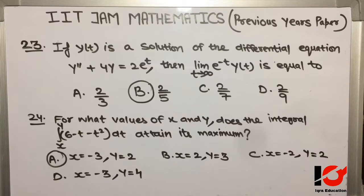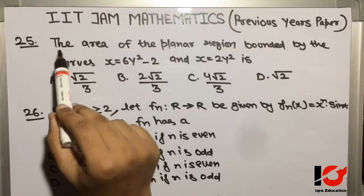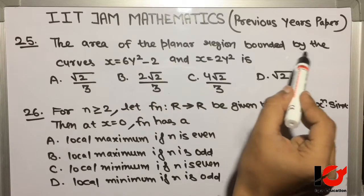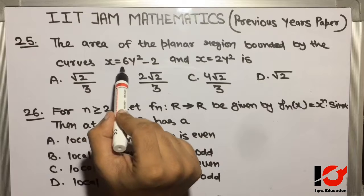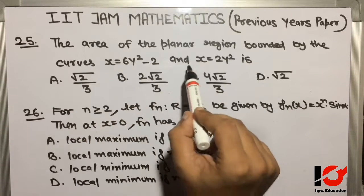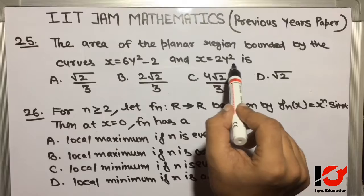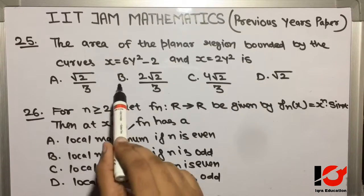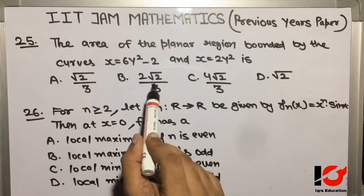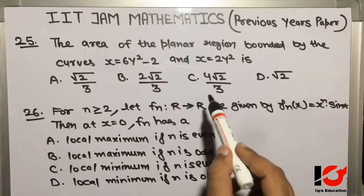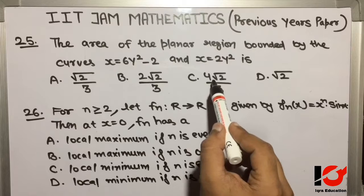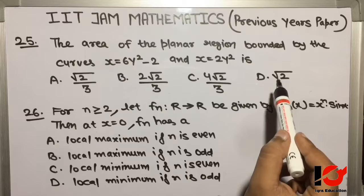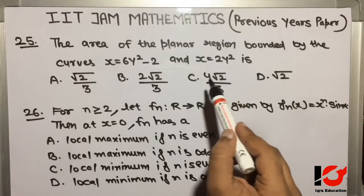Question 25: The area of the planar region bounded by the curves x = 6y² - 2 and x = 2y² is: Option A: √2/3. Option B: 2√2/3. Option C: 4√2/3. Option D: √2. The required answer is Option C — 4√2/3.